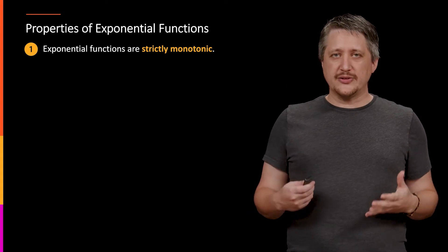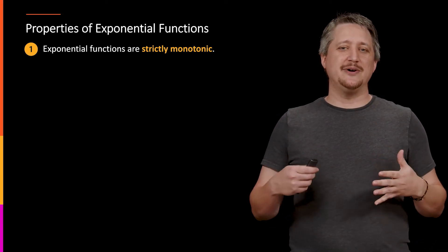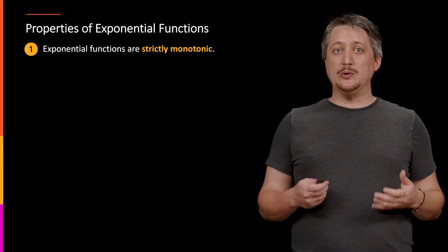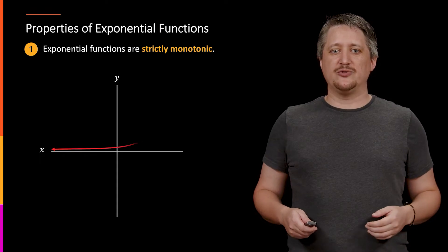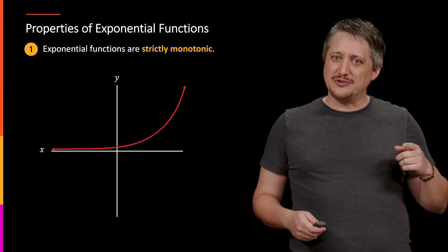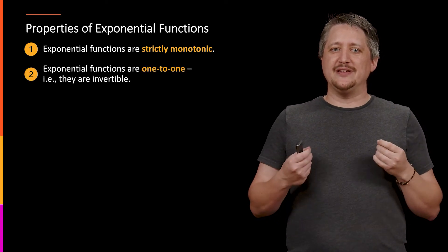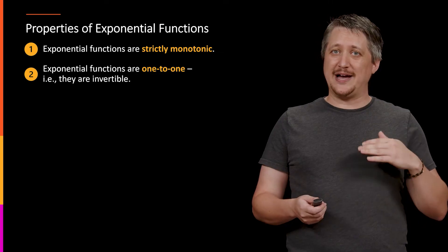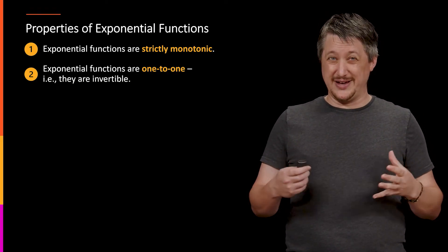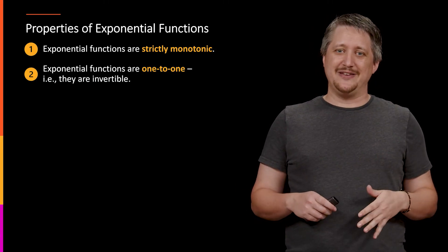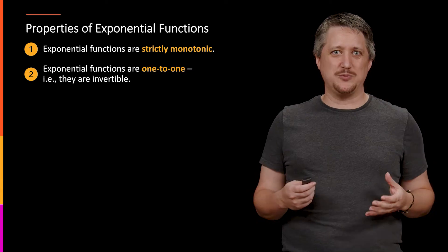Other things to know about exponential functions — probably not quite as much in the review category — is that they're strictly monotonic, meaning they go in one direction. They don't go up and down. If we graph an exponential on an x-y axis, it looks sort of flat at first but is always increasing, and eventually takes off upward. Because of that, exponential functions are one-to-one, meaning they're invertible, because they pass the horizontal line test.